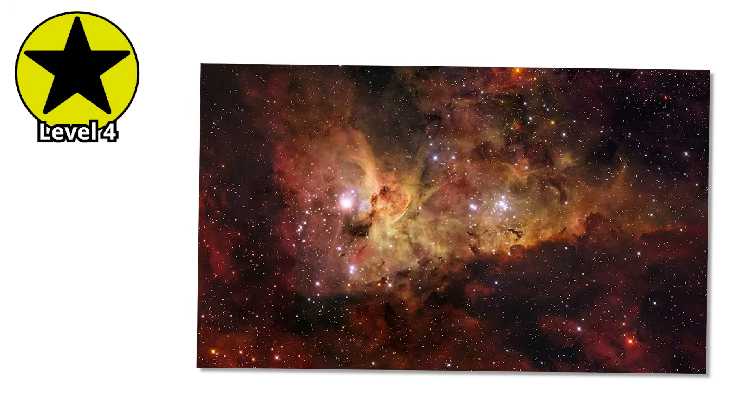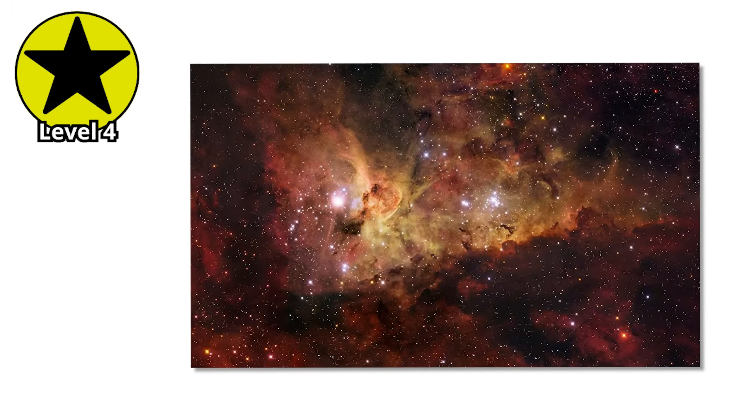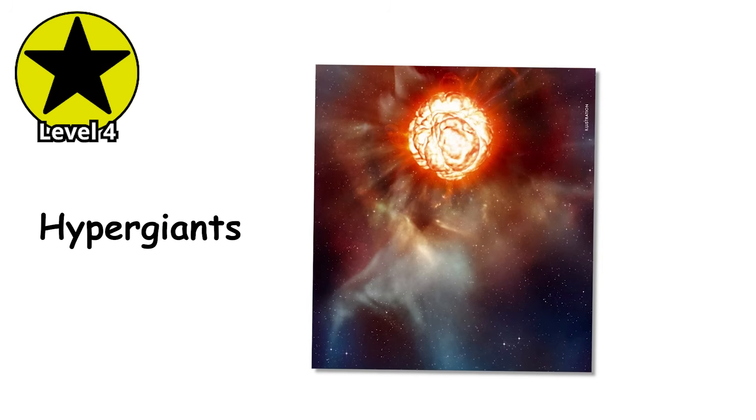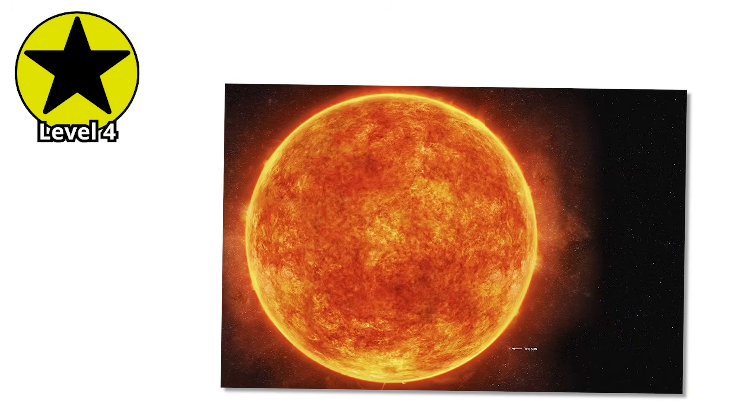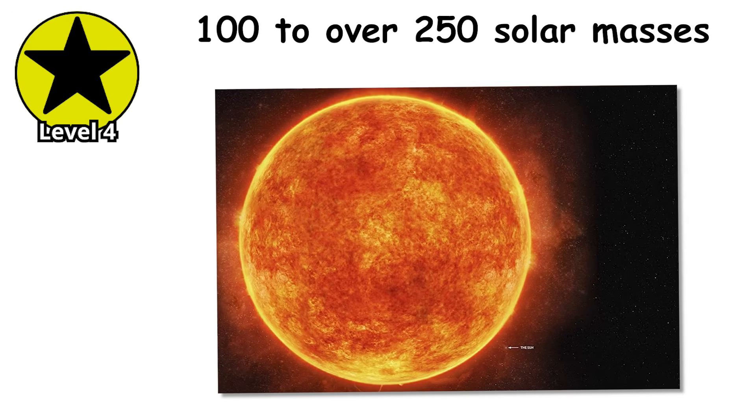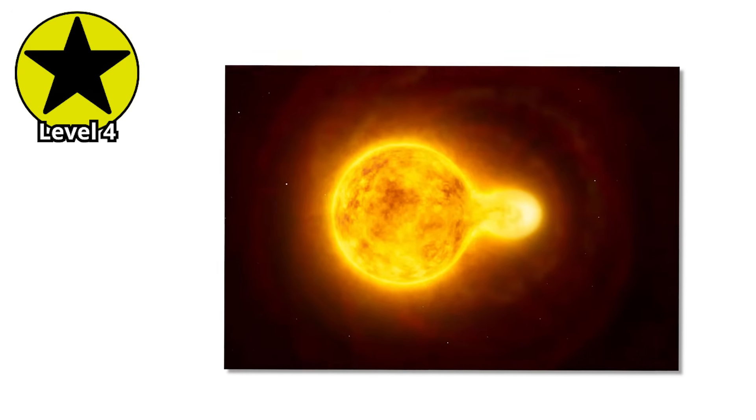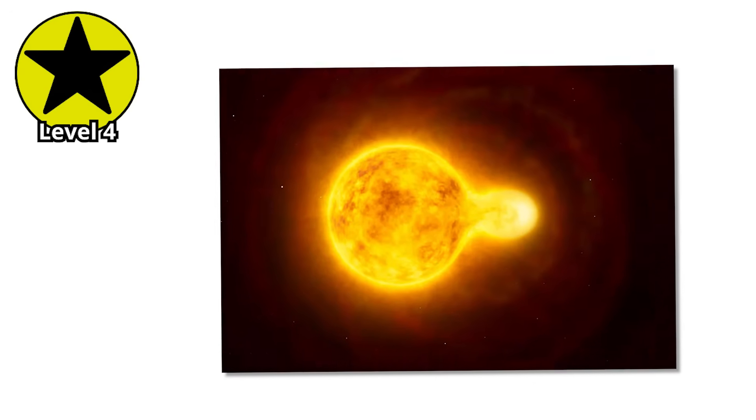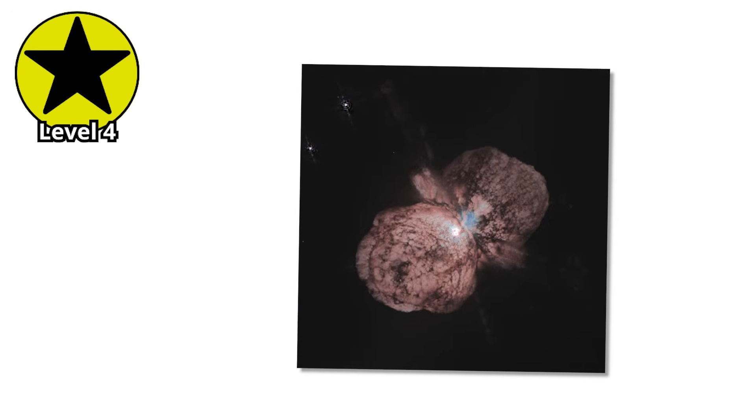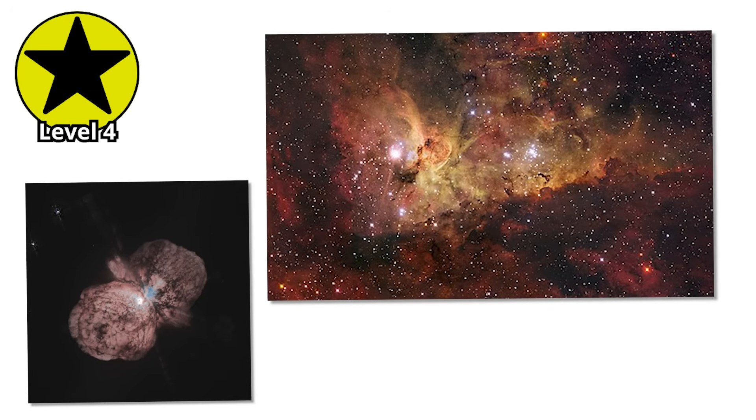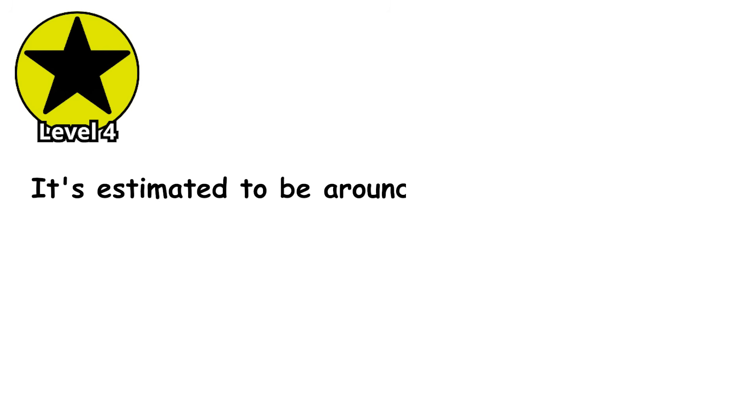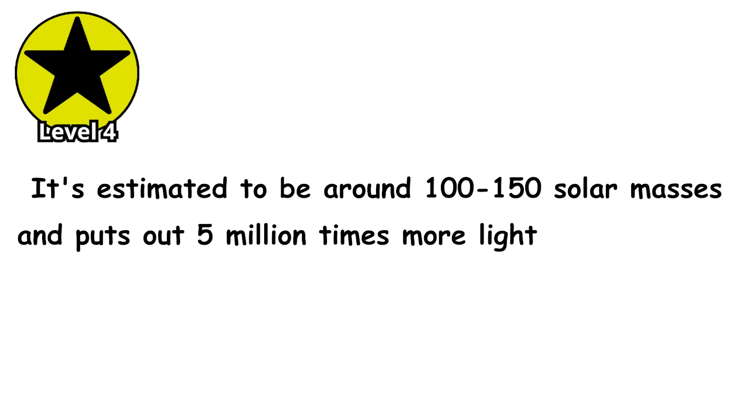We're entering territory now where size becomes almost incomprehensible. Hypergiants are among the rarest and most extreme stars in the universe, with masses ranging from 100 to over 250 solar masses. They're so massive that they're constantly on the edge of tearing themselves apart. Take Eta Carinae, a hypergiant located about 7,500 light-years away in the Carina Nebula.